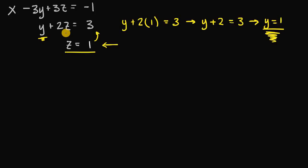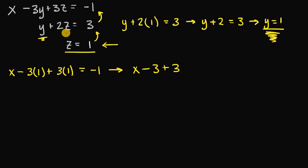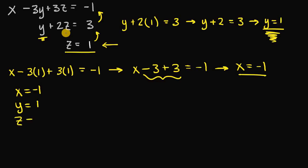Now since we know y and z, we can use these values, plug them into the equation above them, and solve for our last unknown variable, x. If we rewrite the first equation with the values of y and z plugged in, we get x minus 3 times y, which is 1, plus 3 times z, which is also 1, equal to negative 1. Simplifying: x minus 3 plus 3 equals negative 1. Negative 3 and 3 are just 0, so we're left with x is equal to negative 1. The solution set is x equals negative 1, y equals positive 1, and z equals positive 1.